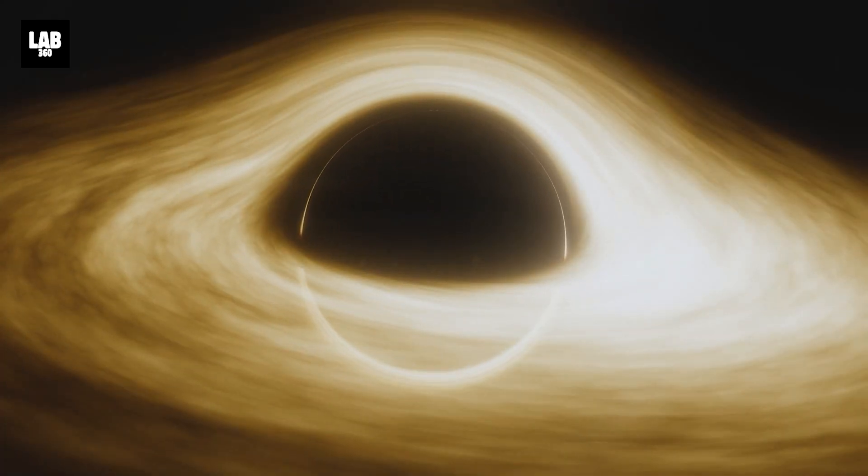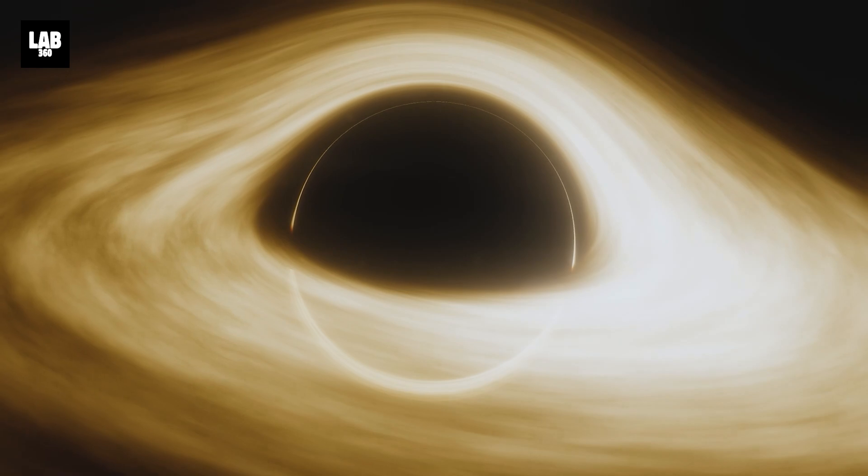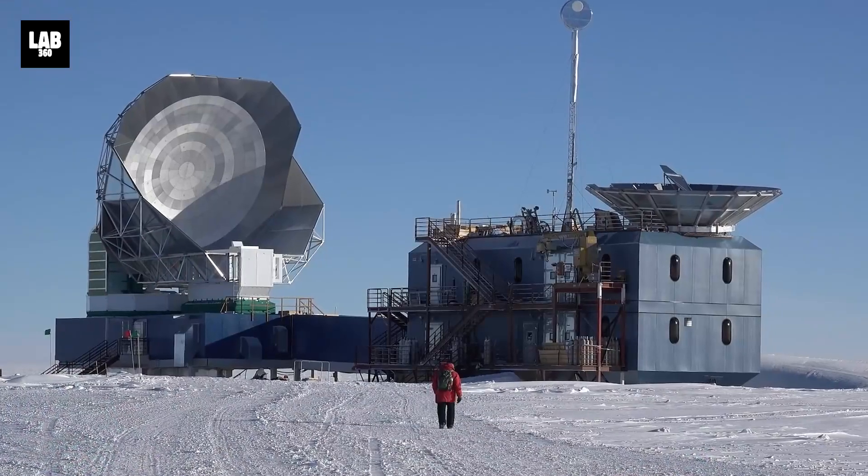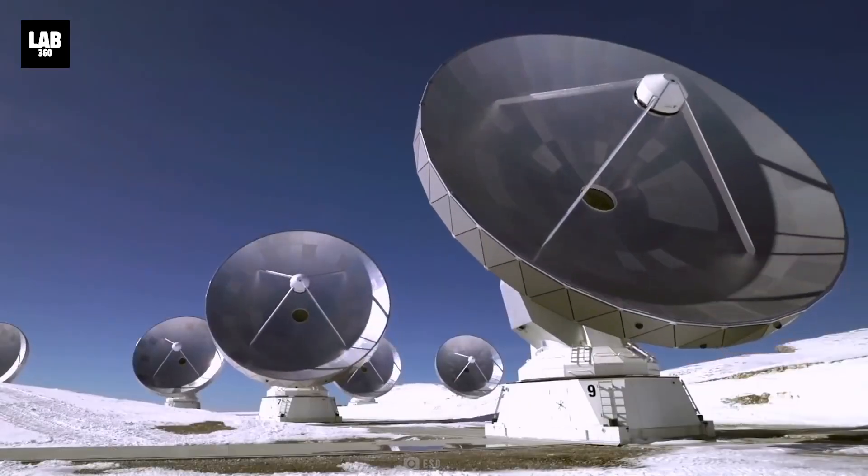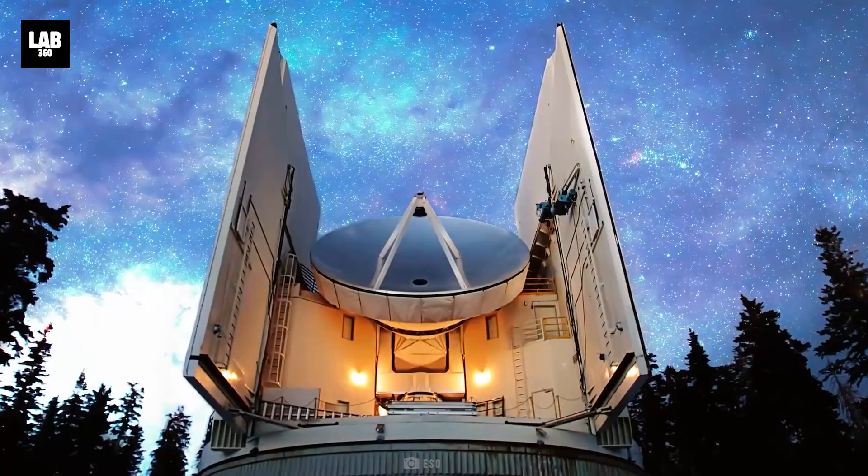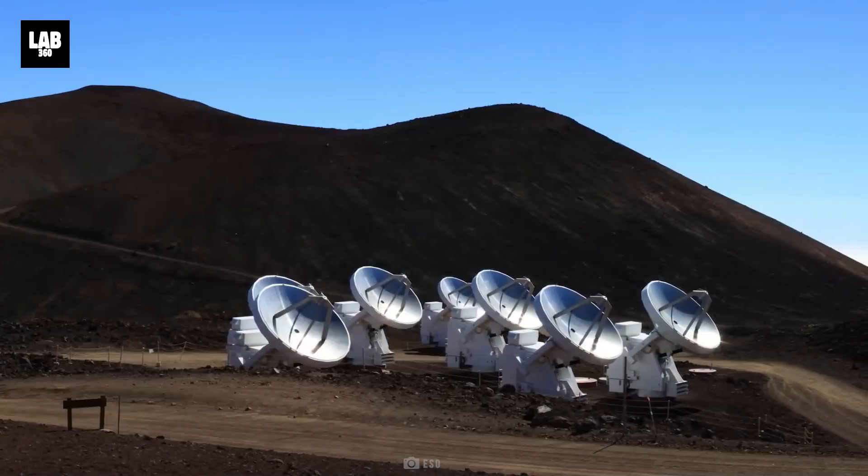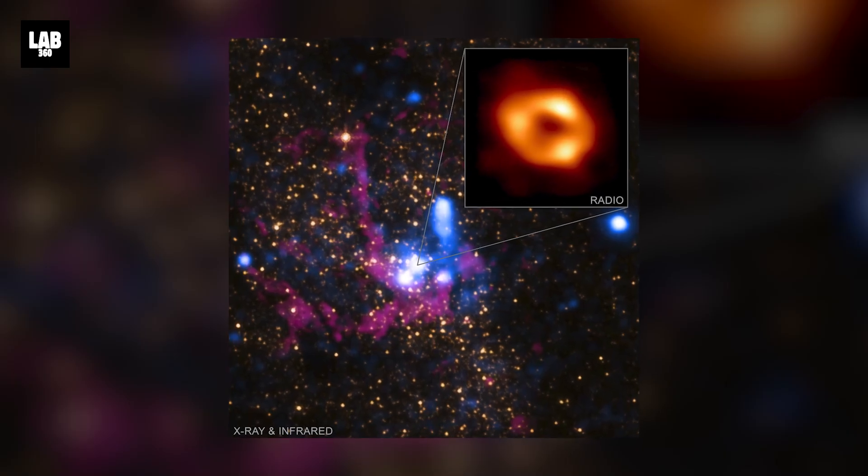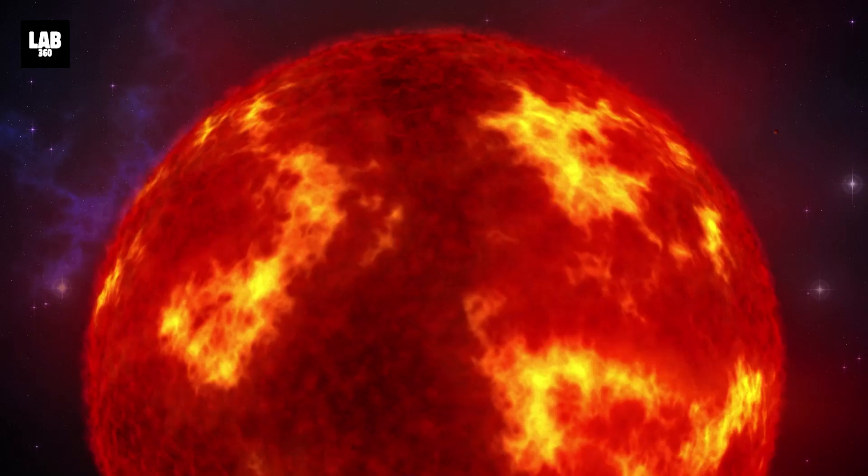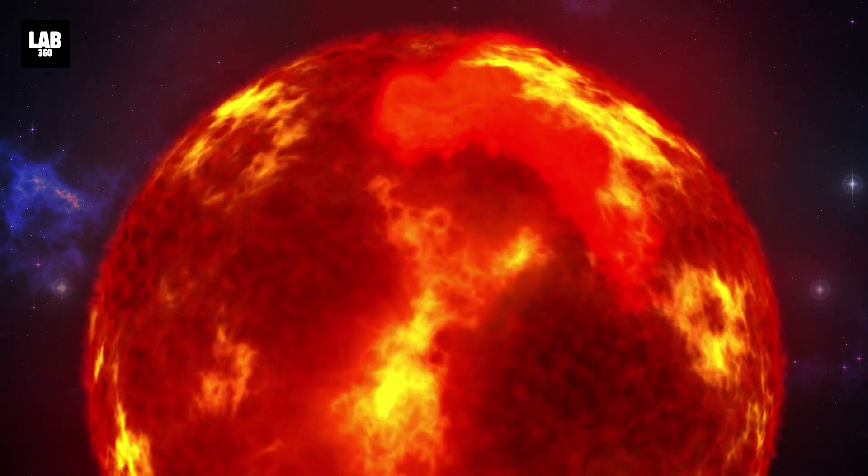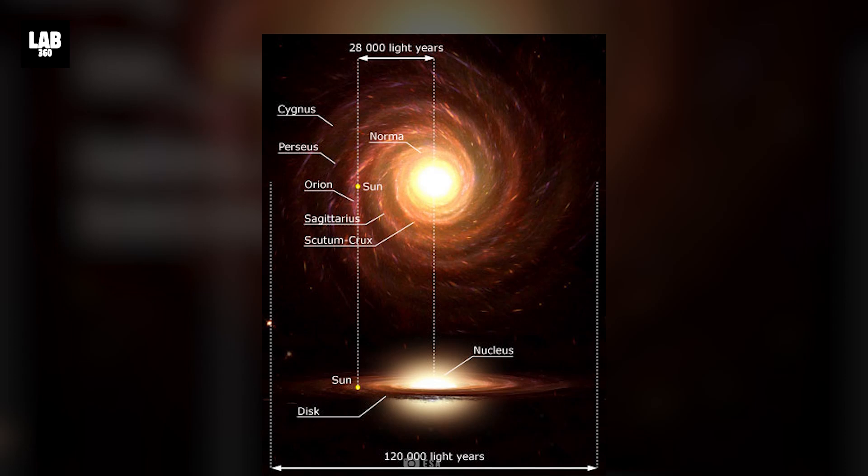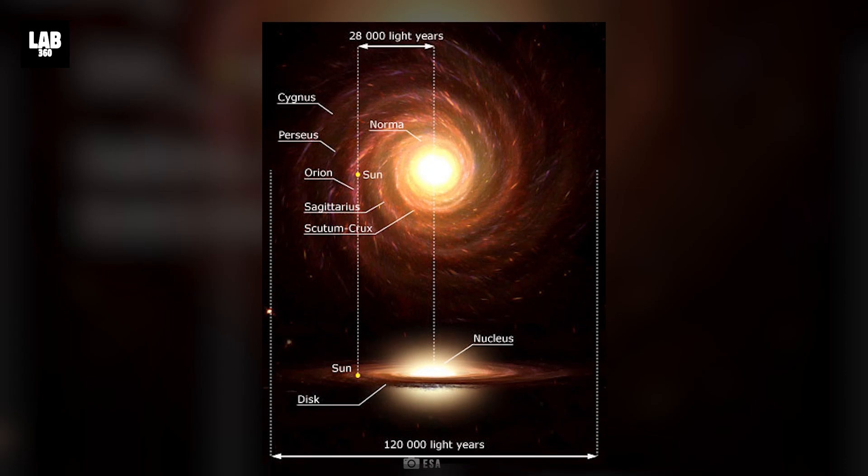Most big galaxies have a supermassive black hole. The supermassive black hole at the center of our Milky Way was recently imaged by the Event Horizon Telescope. It is called Sagittarius A star. Its mass is 4 million times that of the Sun. It is at a distance of 26,000 light-years from us.